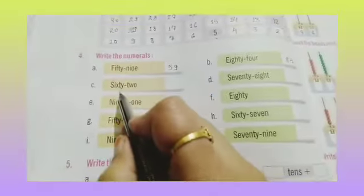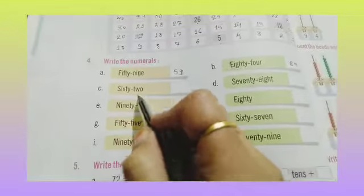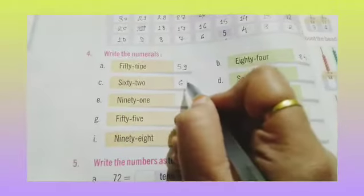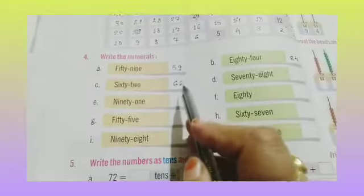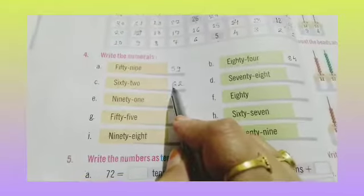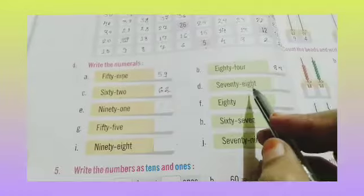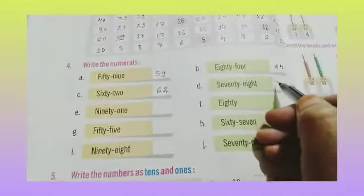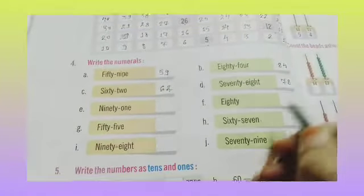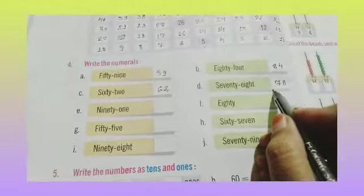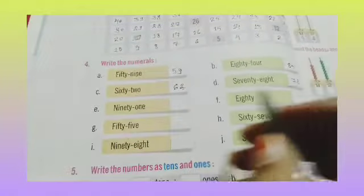Now C: 62. So 6 tens and 2 ones, giving us 62. And 78 — 7 at the tens place and 8 at the ones place, so 78.